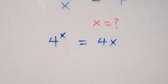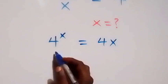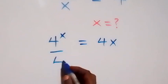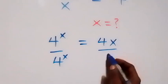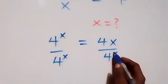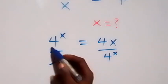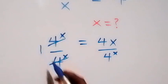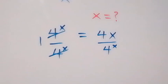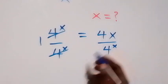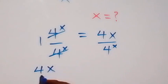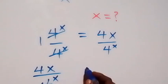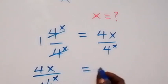And here, what we have, we can divide both sides by 4 raised to power x. The 4 raised to power x terms cancel each other and we have one left, which implies that we can write this side as 4x over 4 raised to power x, which is equal to 1.